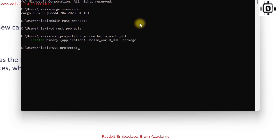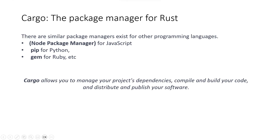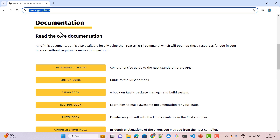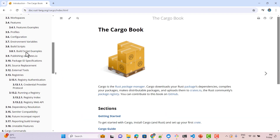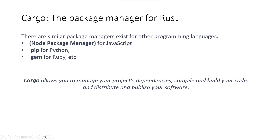Let's understand what Cargo is. It is the official package manager for Rust. Similar package managers exist for other languages — npm for JavaScript, pip for Python, gem for Ruby. These allow developers to manage dependencies and install packages. Cargo lets you manage dependencies, compile and build your code, and manage distribution and publishing of your software.